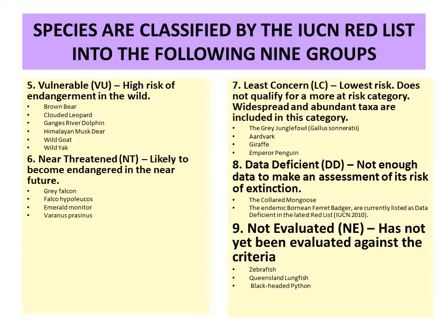Number five is vulnerable — a high risk of endangerment in the wild. If not protected, these species will become endangered soon. Examples include the brown bear, clouded leopard, Ganga river dolphin, Himalayan musk deer, wild goat, and wild yak.